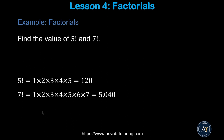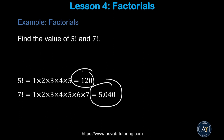Now we'll learn how to find a factorial. For example, 5! = 5 × 4 × 3 × 2 × 1 = 120, and 7! = 1 × 2 × 3 × 4 × 5 × 6 × 7 = 5040. Try the two practice problems by yourself and make sure you get these two answers.